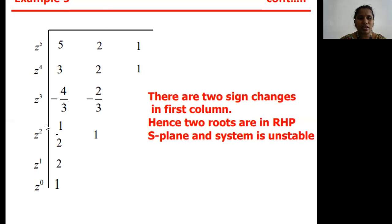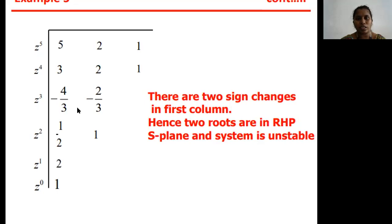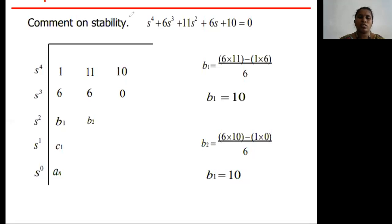Looking at the first column values, are there any sign changes? From 3 (positive) it becomes −4/3 (negative) — that is the first sign change. Then from −4/3 (negative) it becomes +1/2 (positive) — that is the second sign change. So the total number of sign changes is two, meaning two roots exist on the right-hand side of the s-plane. Therefore, this system is an unstable system.